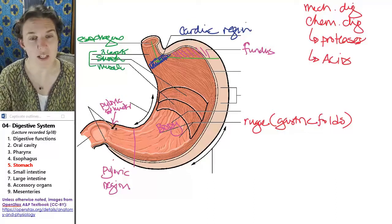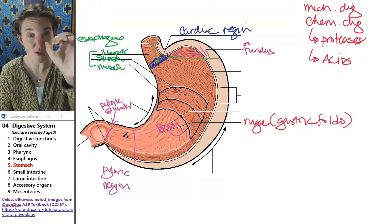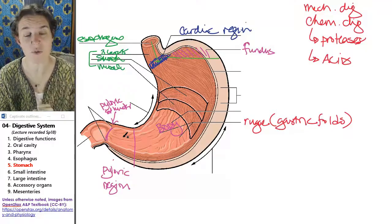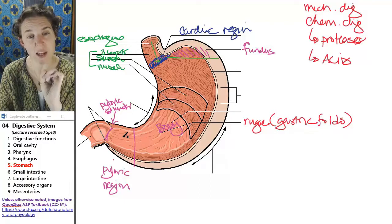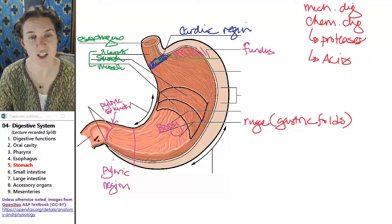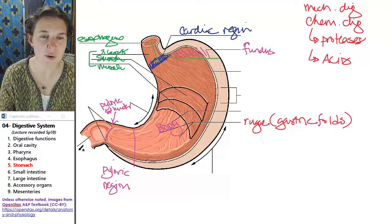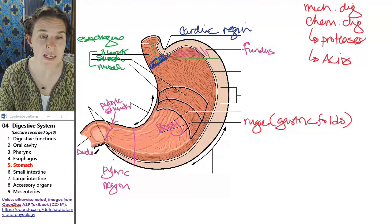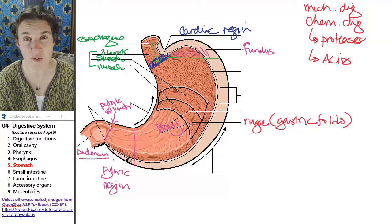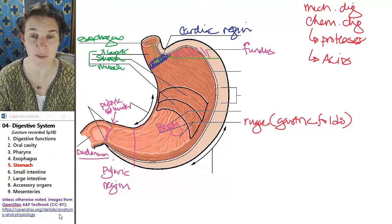The pyloric sphincter remains closed. It's a circular arrangement of smooth muscle that can close down. And then it opens to let just a little bit of stuff out into the duodenum, which is the first portion of the small intestine. And we'll talk about that next.